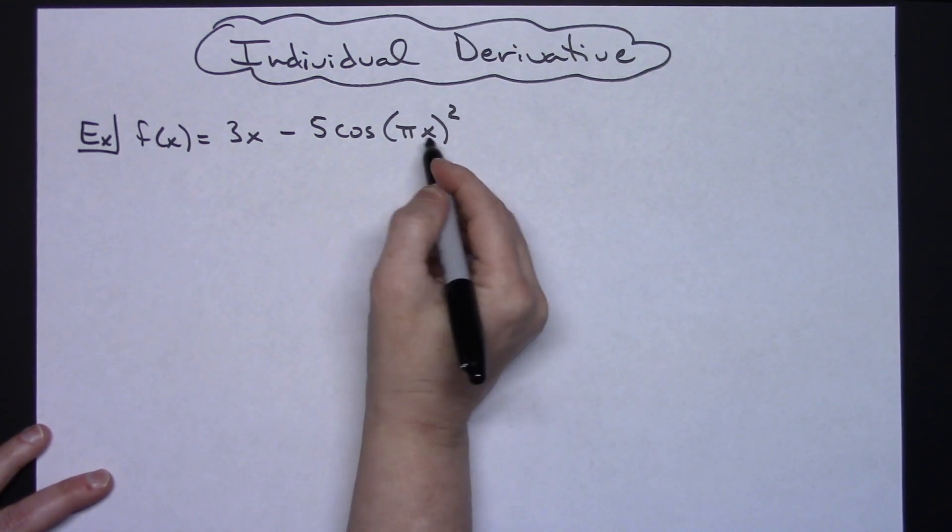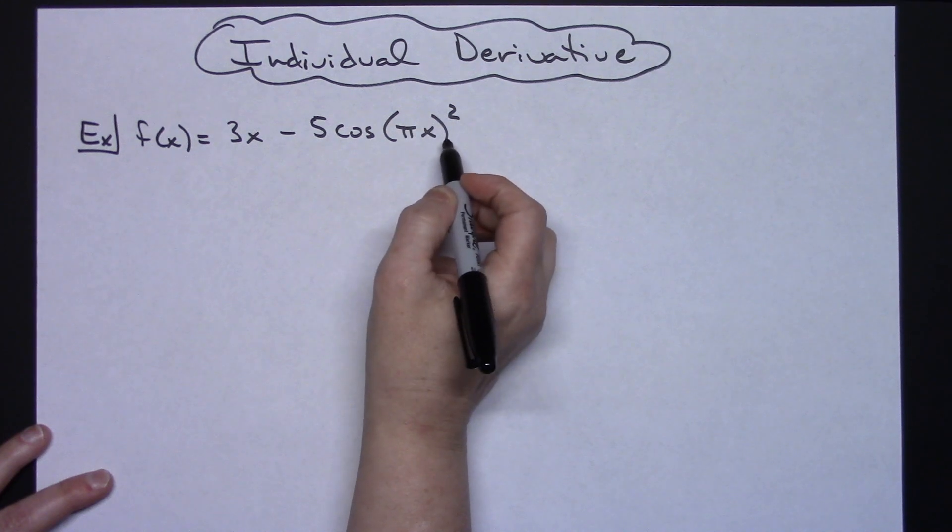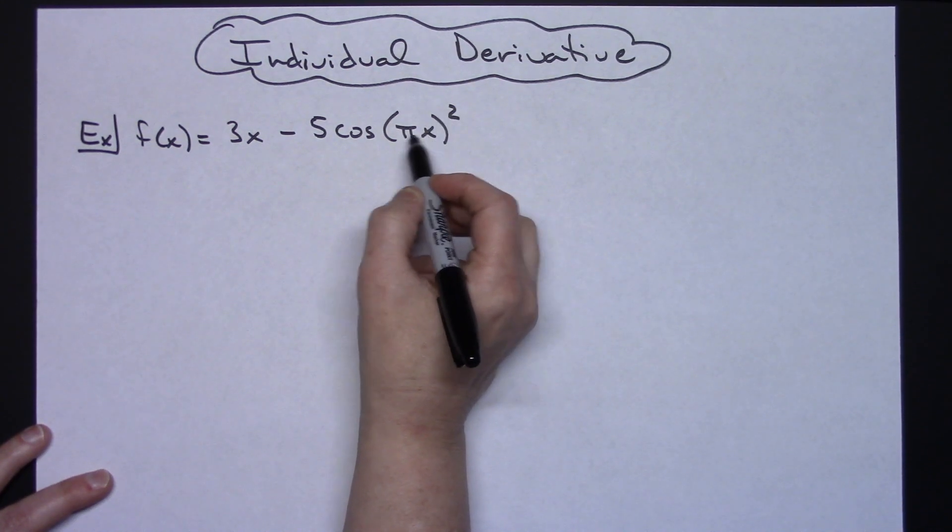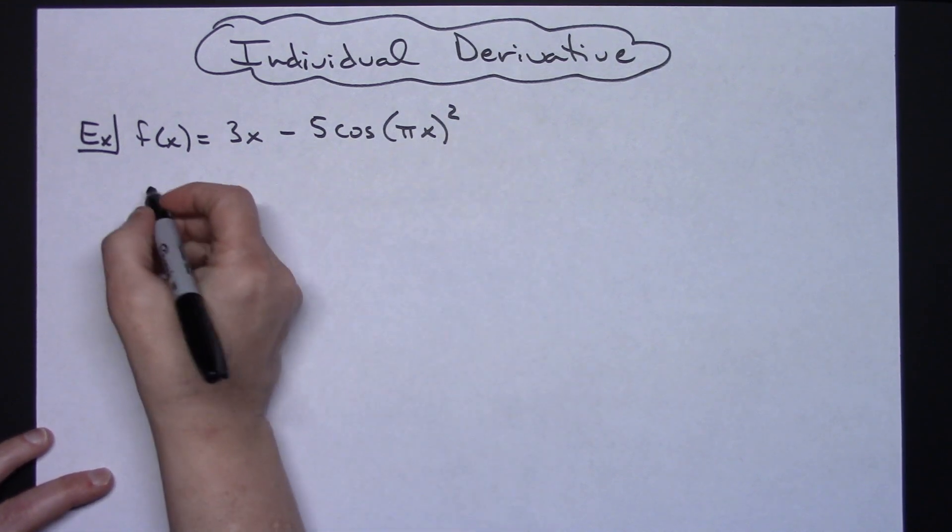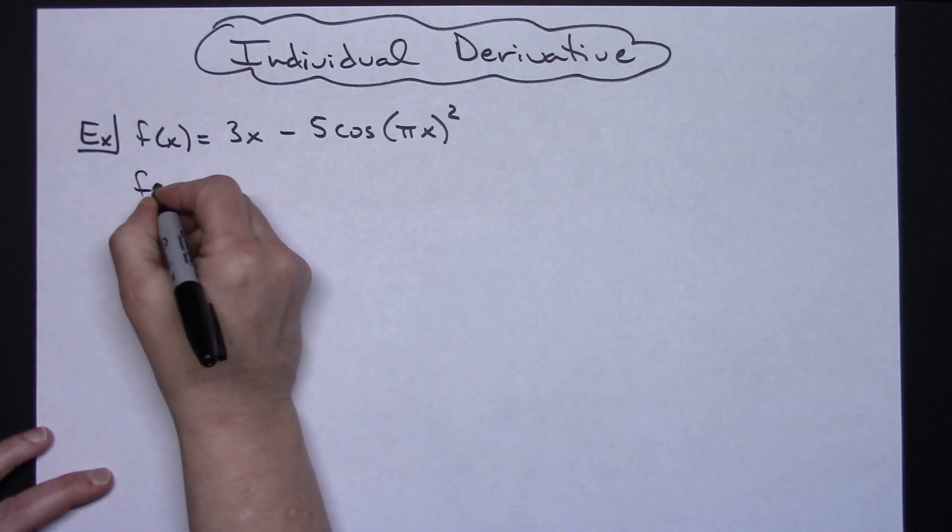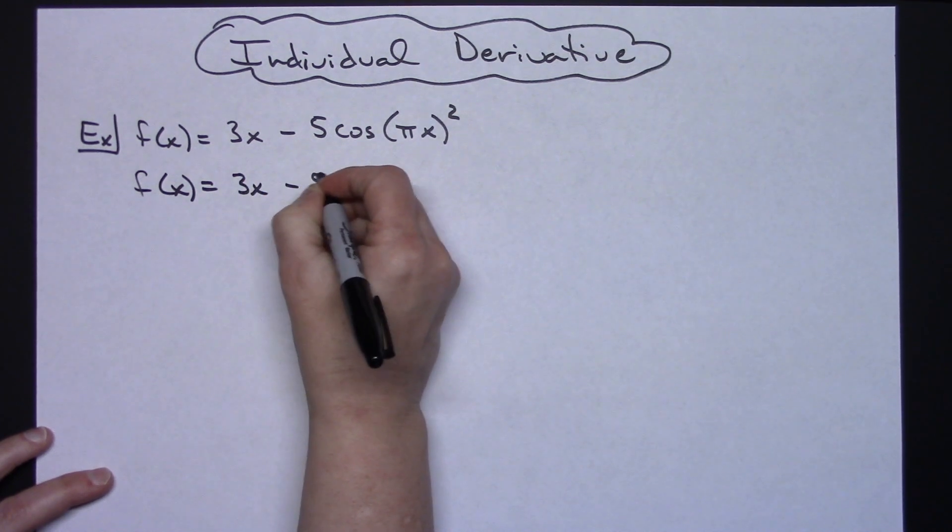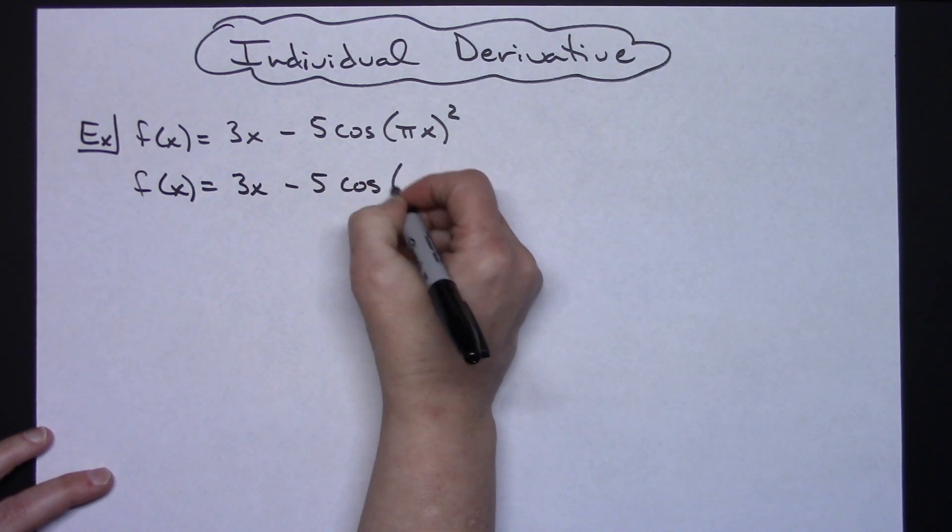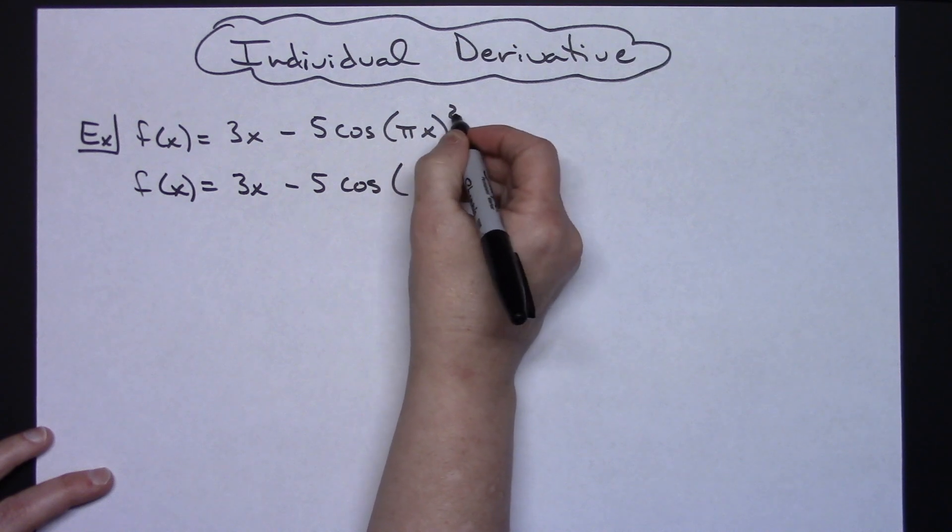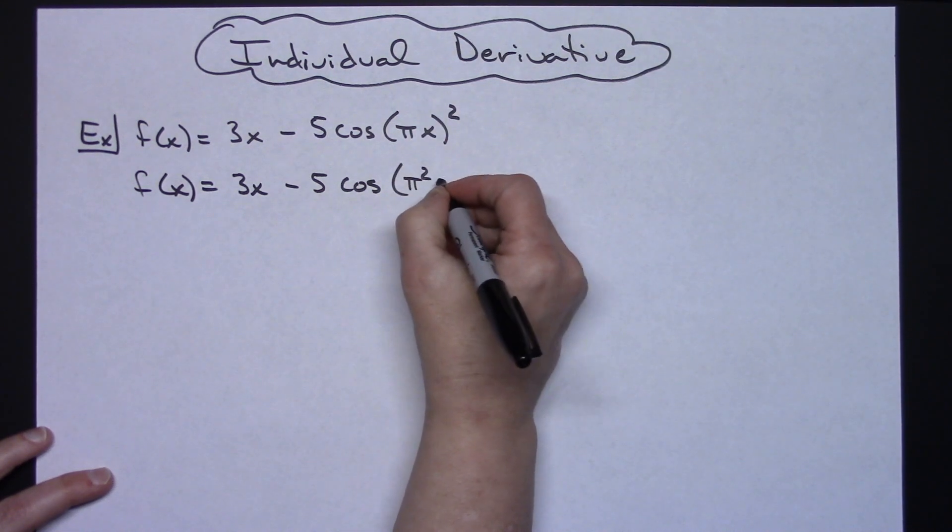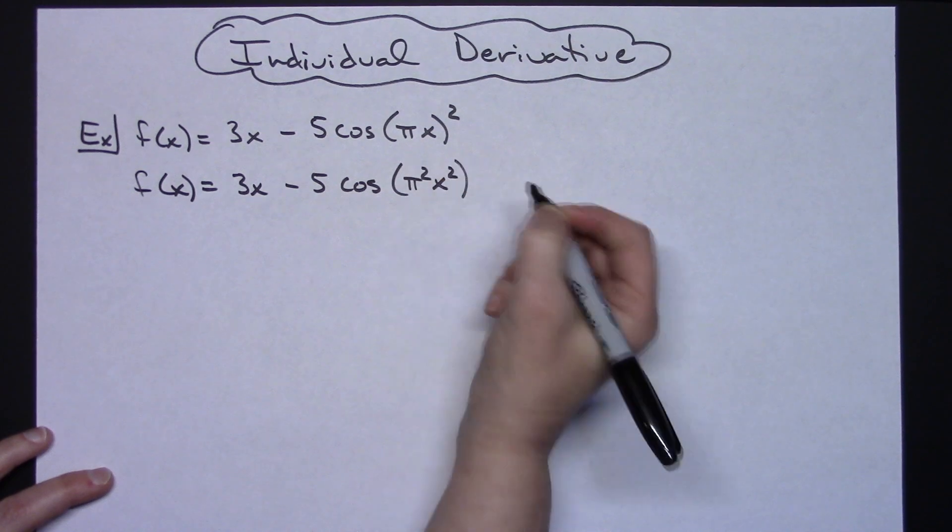First thing I'm going to do is take a look at this expression right here and rewrite it so that it's a little more clear what we're taking the cosine of. So in a rewrite I will still have f of x equals 3x minus 5 cosine and then I'm just going to do power raised to a power on both of those so we'll have a pi squared x squared.